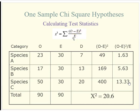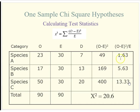The formula is straightforward: take observed count minus expected count, square it for each cell, and divide by the expected. I like to set this up in a table. I have each observed count, the expected counts, then a column for the difference, then squared differences — that's the numerator — then divided by the expected. This gives me individual chi-square values: 1.63 for species A, 5.63 for species B, and 13.33 for species C. I sum all of these to get one overall chi-square test statistic.